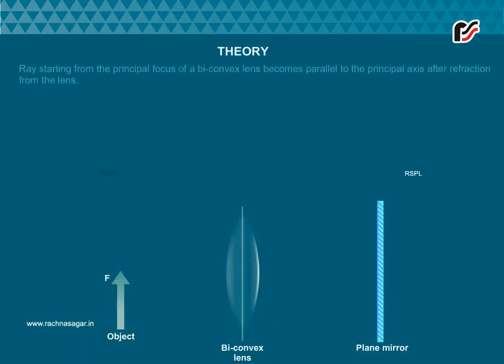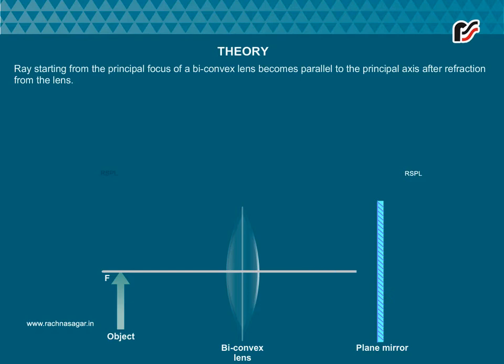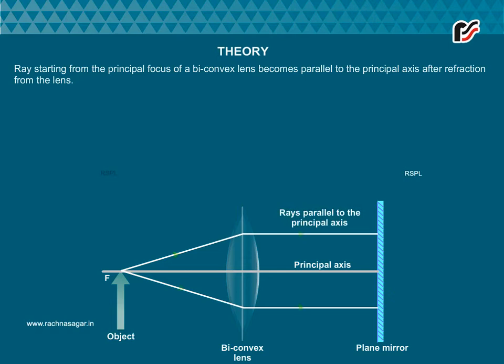Theory. Rays starting from the principal focus of a biconvex lens become parallel to the principal axis after refraction from the lens.